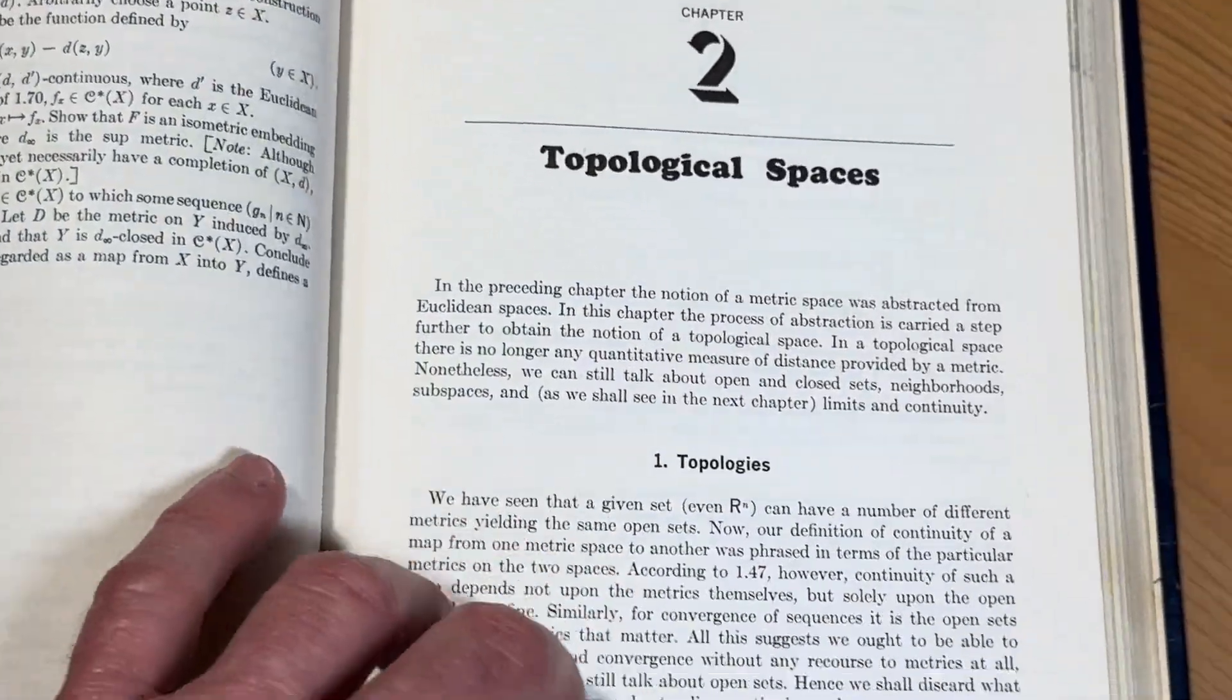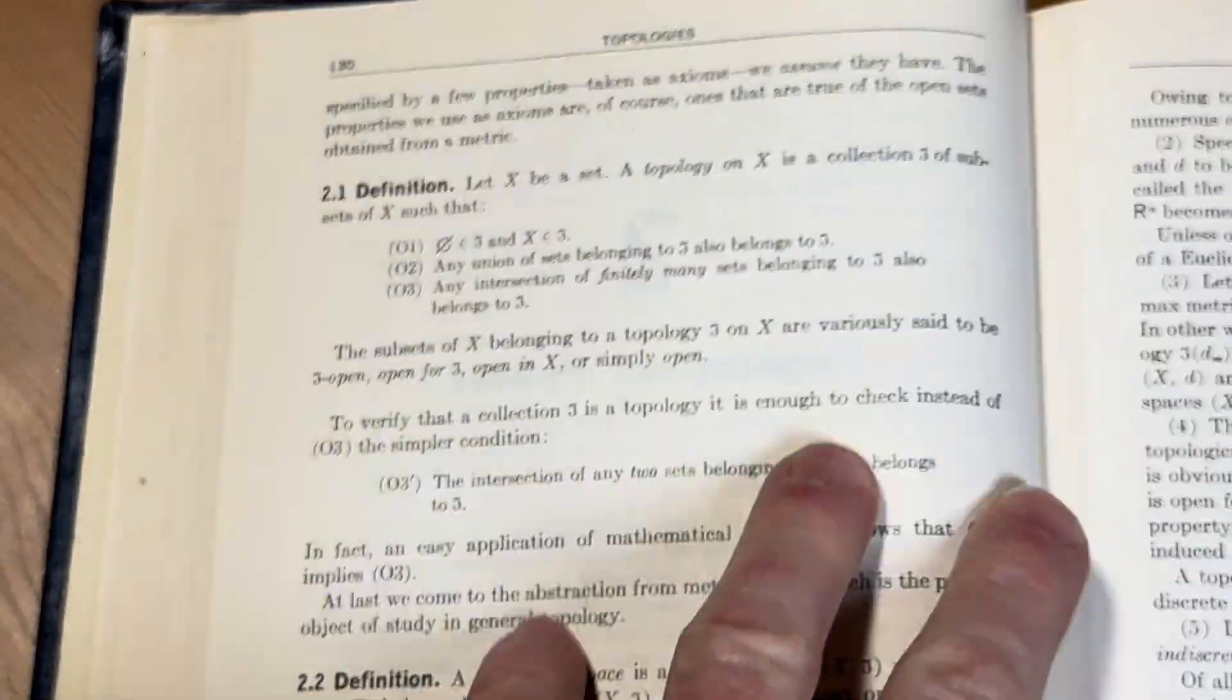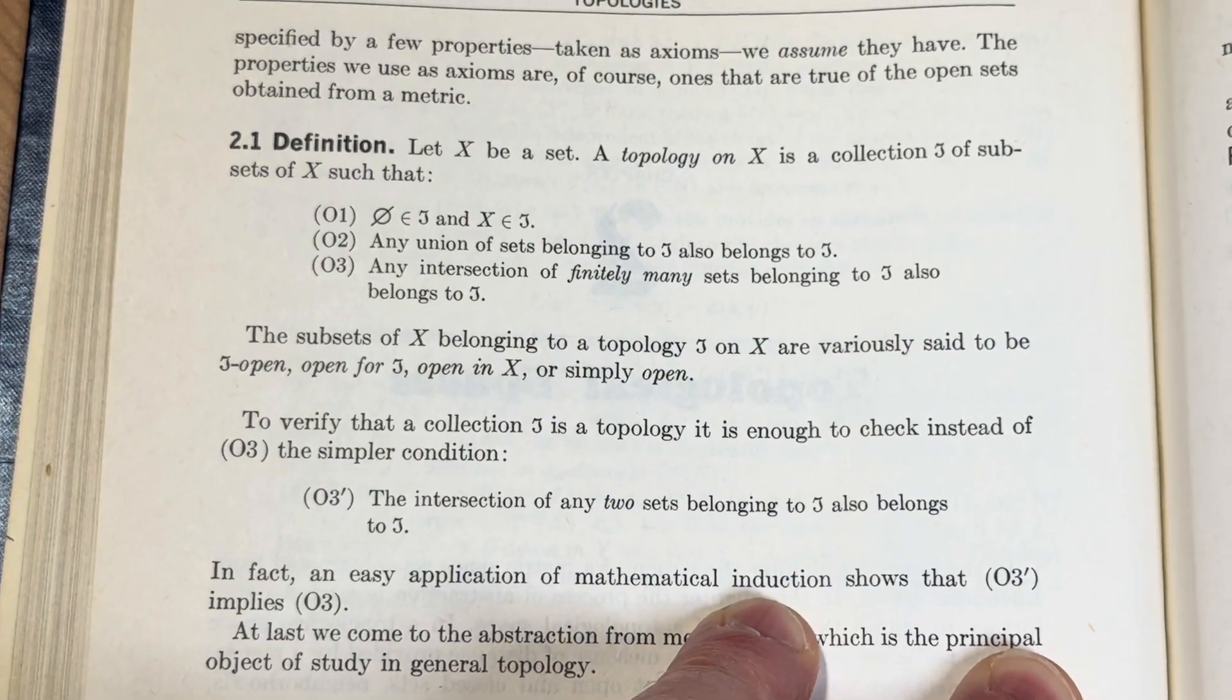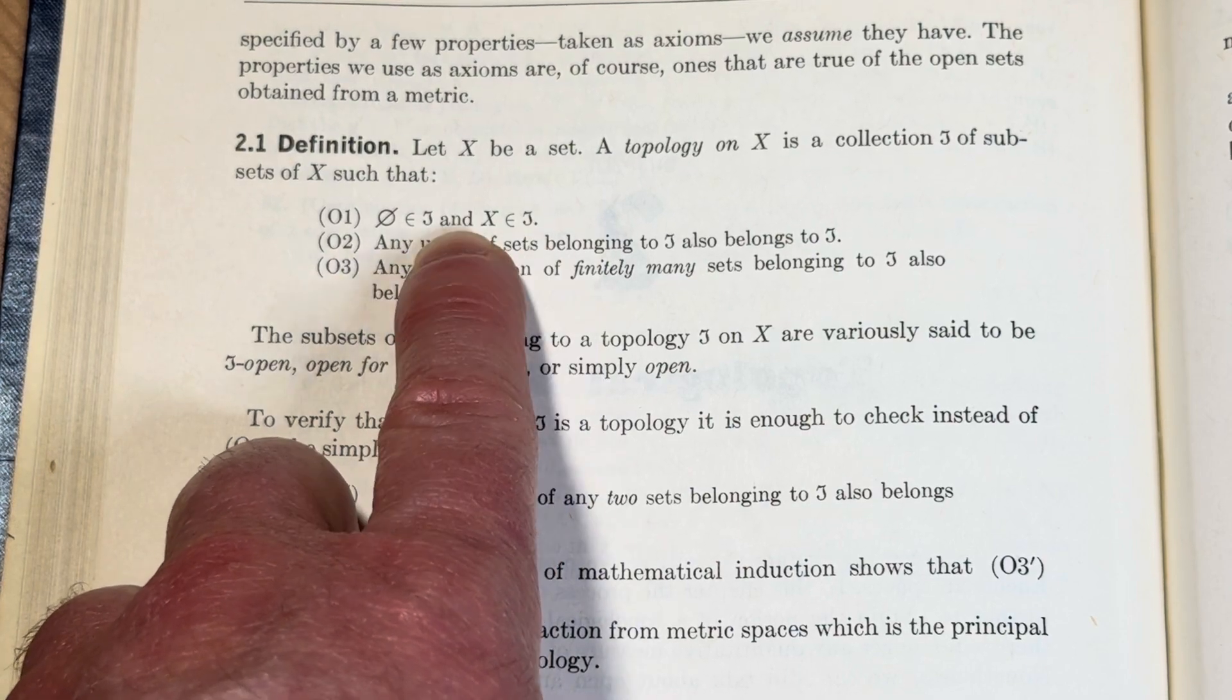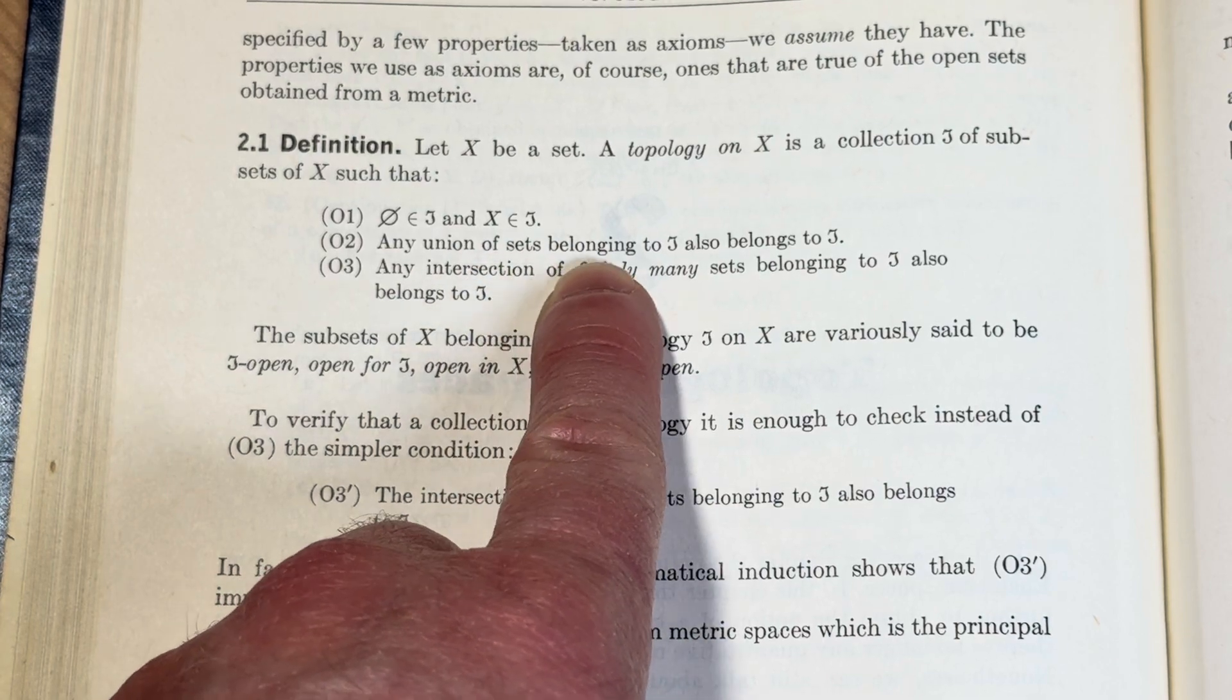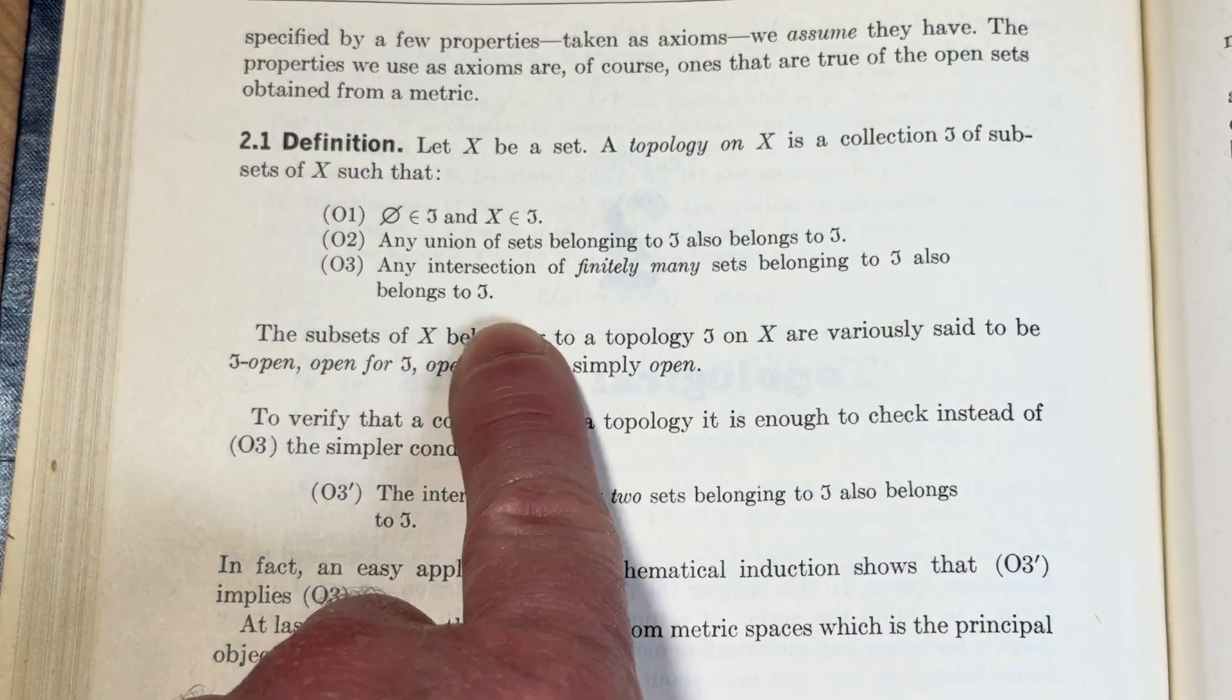I'll try to leave a link in the description so you can check it out if you want. Well, here's the definition of a topology. Let's take a quick look at this. X be a set. A topology on X is a collection of subsets of X such that, and then we have the empty set is in this set here. I'll call it tau. And then X is in tau. Any union of sets belonging to tau also belongs to tau. Any intersection of finitely many sets belonging to tau also belongs to tau.